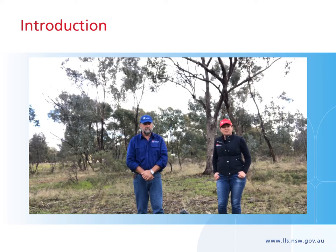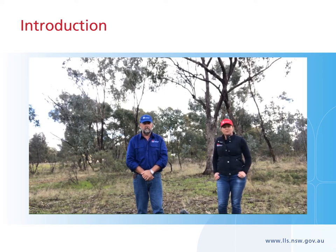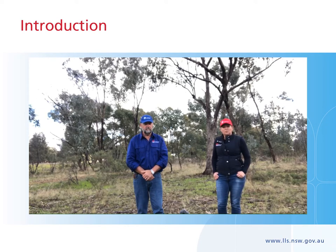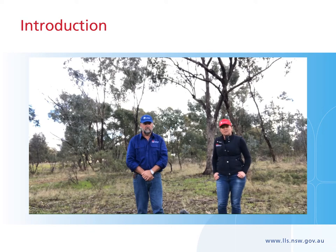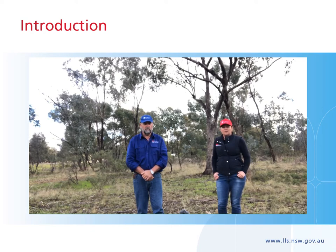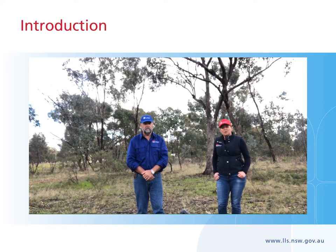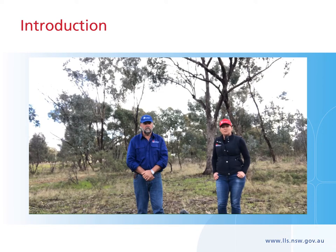We help landholders by providing funding for on-ground works — for example, fencing and alternate water — to manage grazing and preserve native vegetation. We also run specialised training and workshops, either face-to-face or online like this one. Join us today as we explore using the Euclid tool to identify eucalypts.